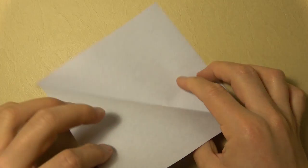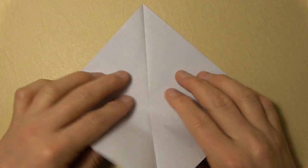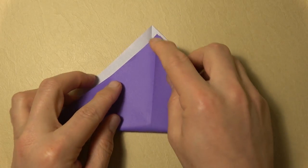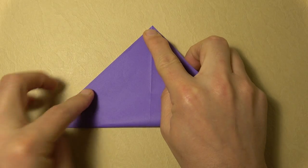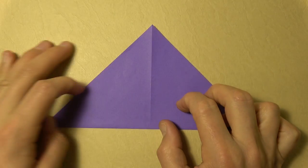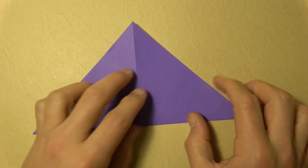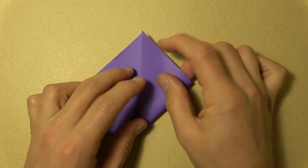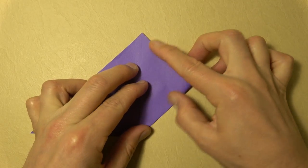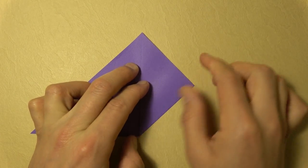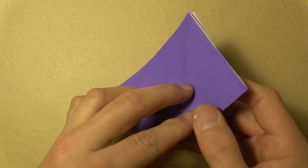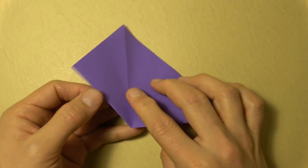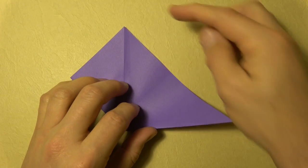Now let's unfold and rotate and let's fold diagonally in half in this direction. Now let's fold this corner to the top. And turn over right to left, and now fold this corner to the top.